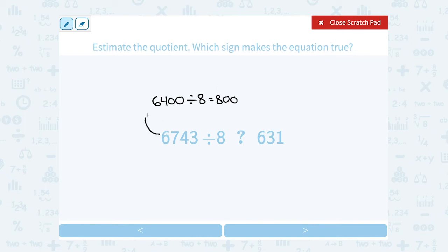And I had picked a number smaller than our actual value. So if I used this exact value, I would have to get an answer bigger, right? Since 6,743 is bigger than 6,400. So I'm going to get an answer that's a little bigger than 800. And that's enough for me to answer this question because a number a little bigger than 800 must be greater than 631.